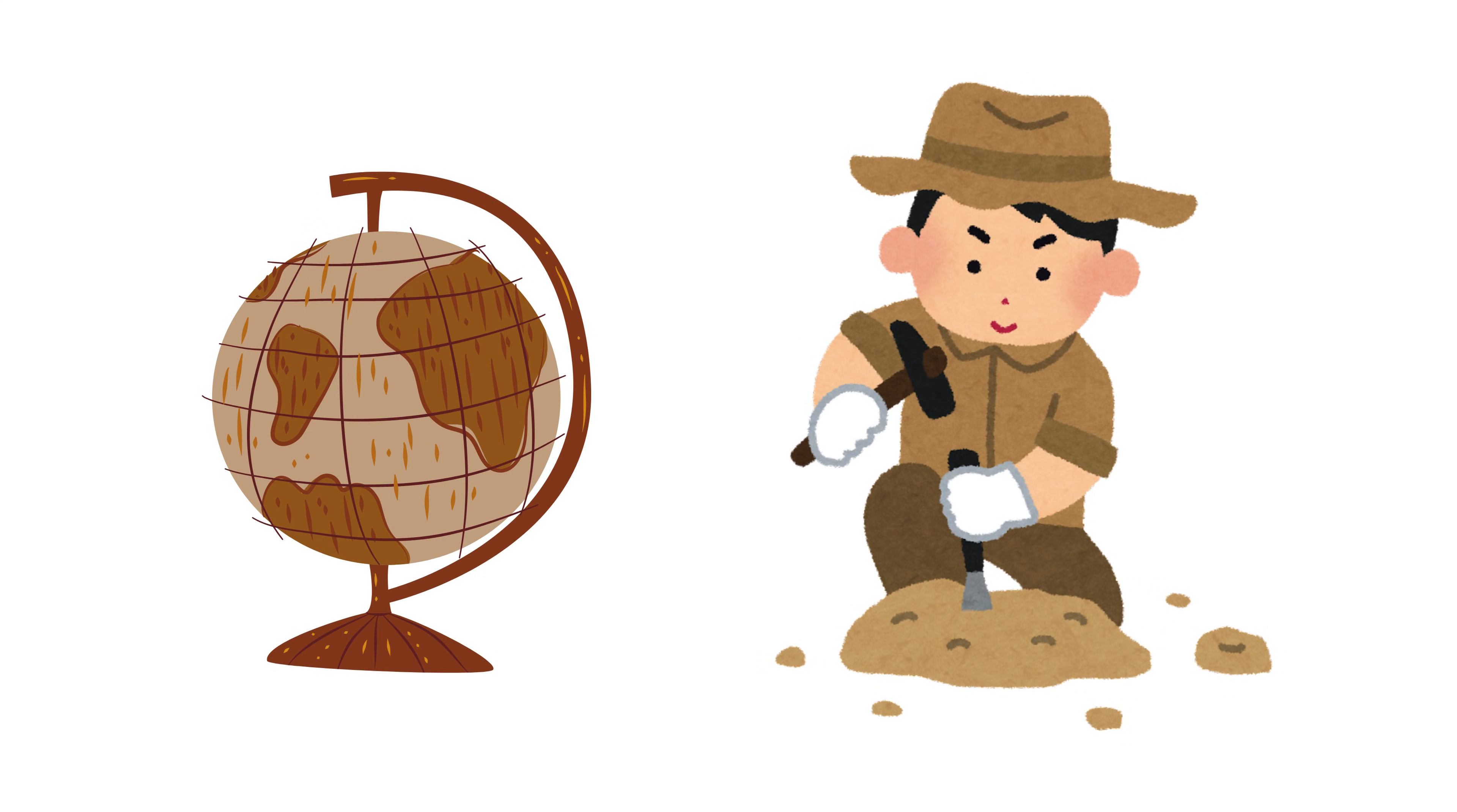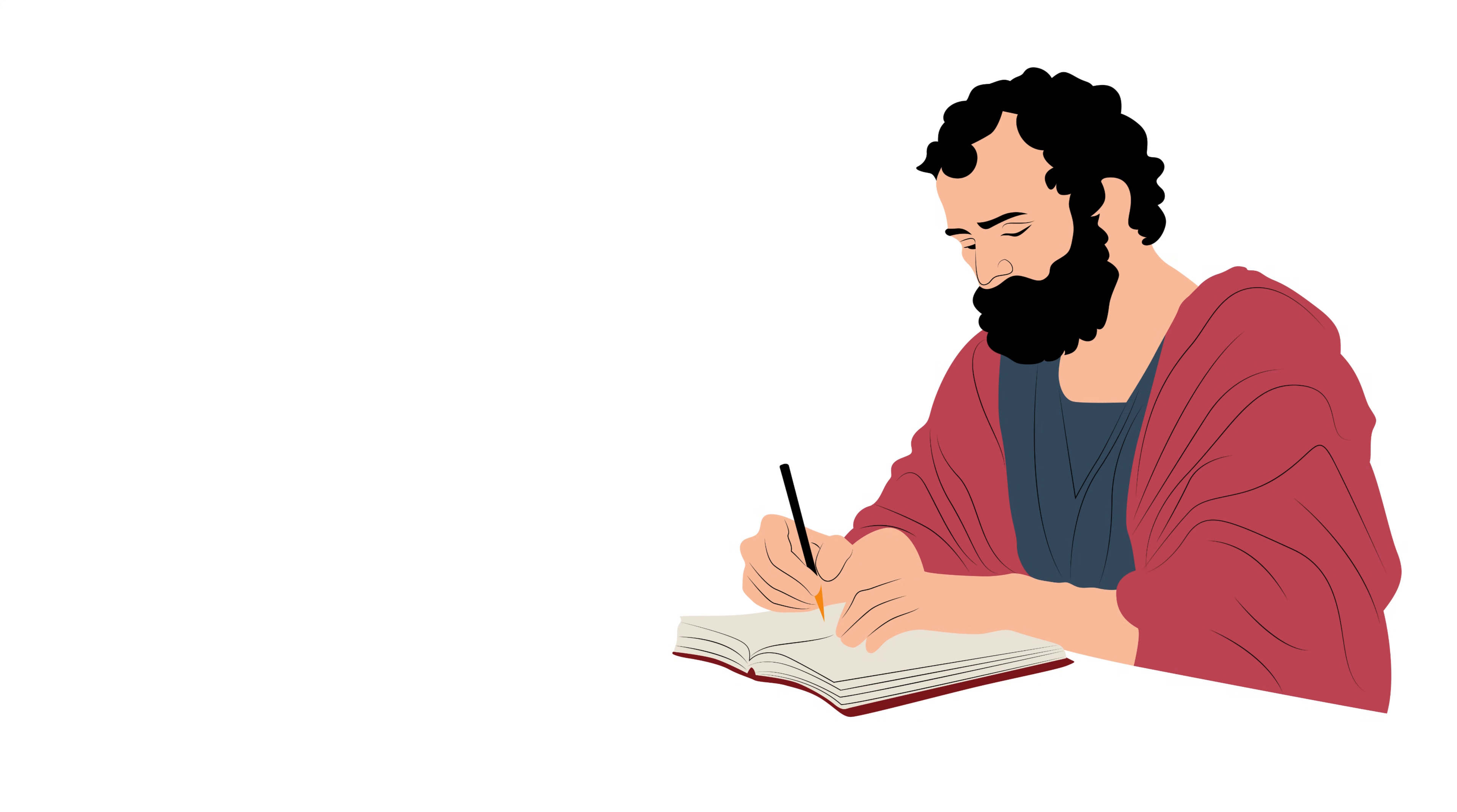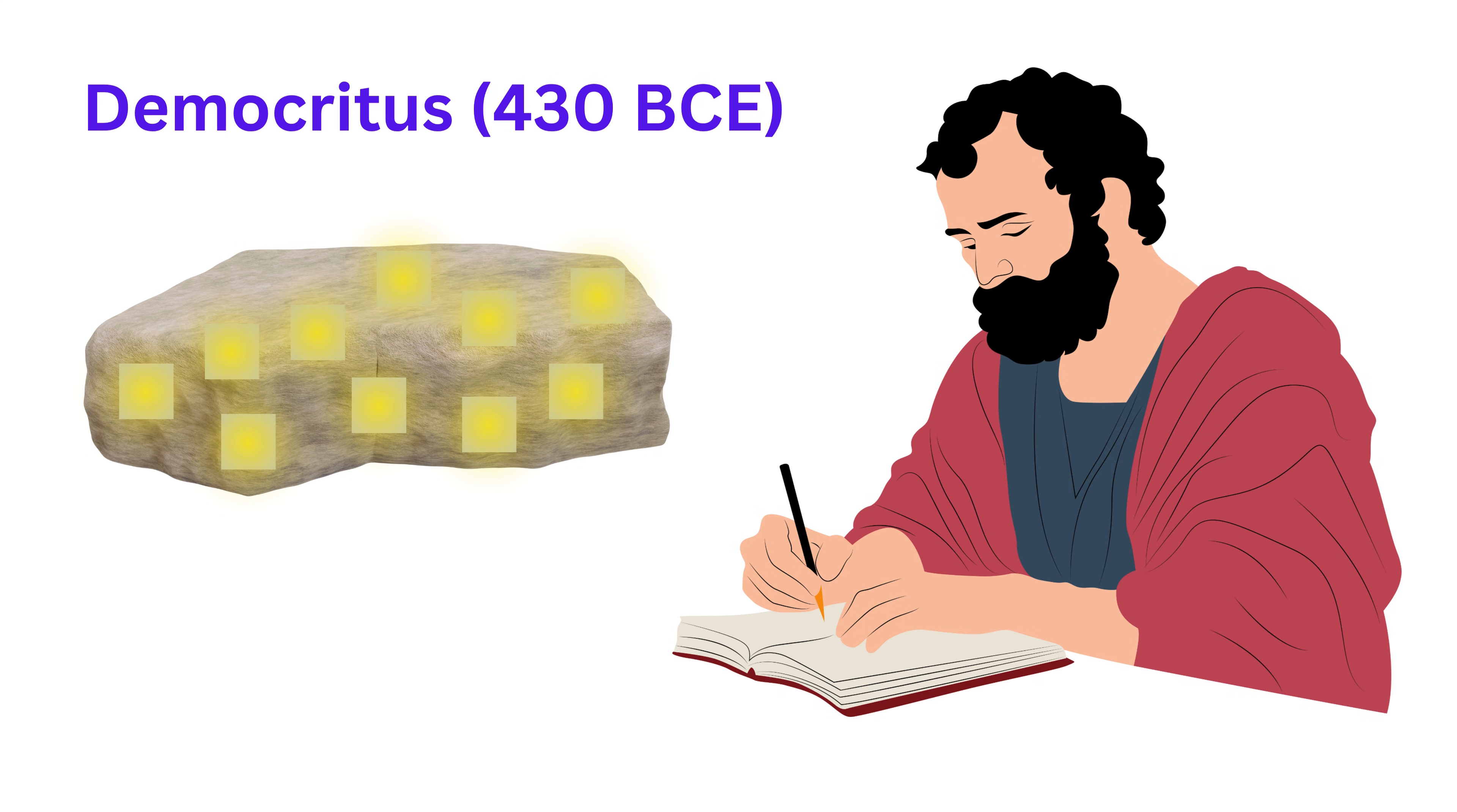Our story begins around 430 BCE in ancient Greece with a philosopher named Democritus. He believed that everything in the universe is made of tiny invisible particles that he called atoms.